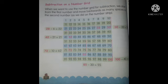Next is subtraction on a number grid. When we use the number grid for subtraction, we start from the first number and move backward as many spaces as the second number. In addition we go forward; in subtraction we go backward.